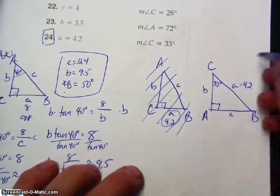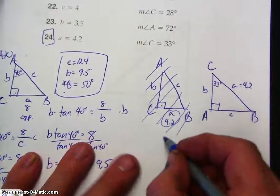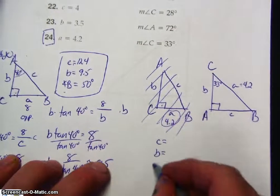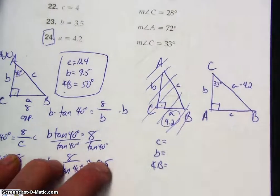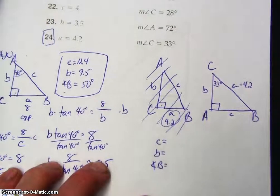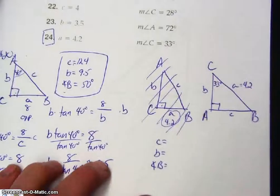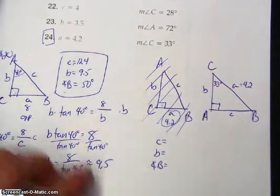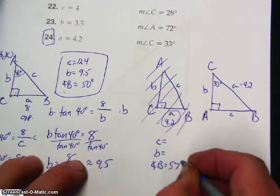So we have to find, let's see, find side C, find side B, and find angle B. Again, angle B is 180 minus 90 minus 33, which is 57 degrees.